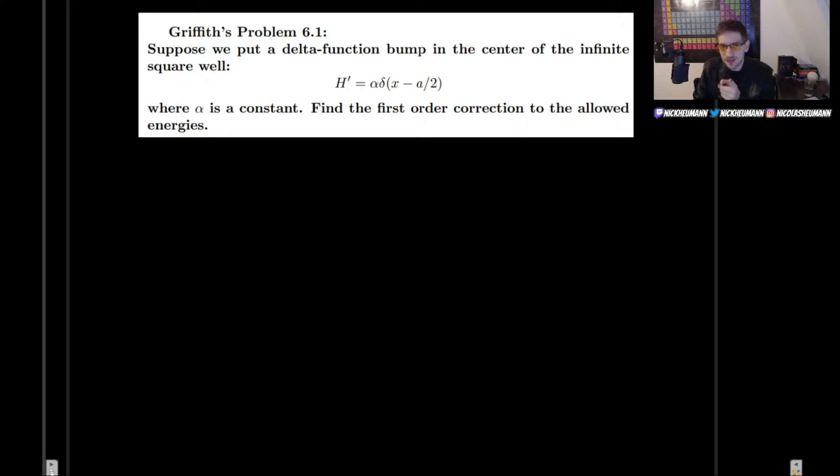Well, in the previous video, we found that we can find the first order corrections to the energy levels with the formula of bra of the unperturbed wave functions times our perturbation, and then the ket of the unperturbed wave functions. If you don't know where this came from or why this has this form, then I really urge you to check out the previous video in the playlist where we derive this formula.